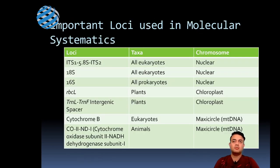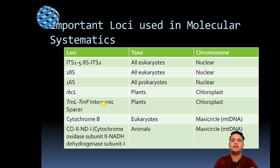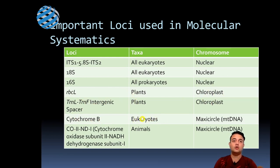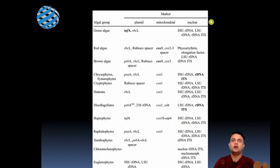Several important loci are used for molecular systematics. The ITS1–5.8S–ITS2 region is used for all eukaryotes. 16S is used for prokaryotes, and 18S for eukaryotes — these are nuclear chromosomes. RBCL and the TRNL-F intergenic spacer are used for plants and are encoded in the chloroplast genome. Cytochrome B is used for eukaryotes and is coded in the maxicircle of mitochondrial DNA. COX1 and ND1 (cytochrome C oxidase subunit 1 and NADH dehydrogenase subunit 1) are used for animal barcoding, also coded in the mitochondrial maxicircle.